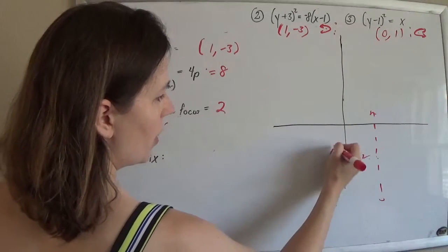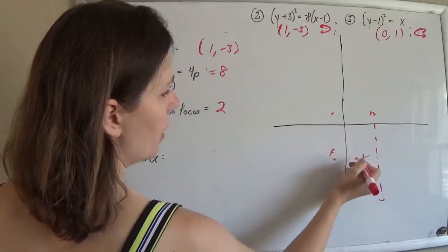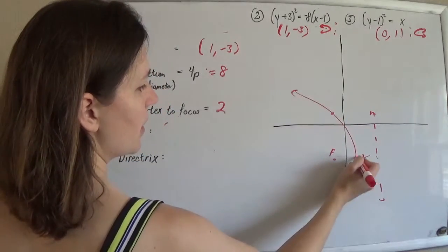1, 2, 3, 4. 1, 2, 3, 4. And connect the dots to make a lovely parabola.